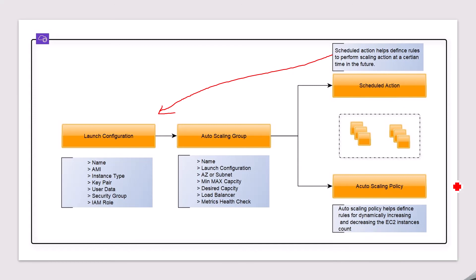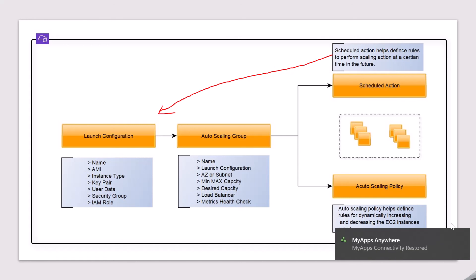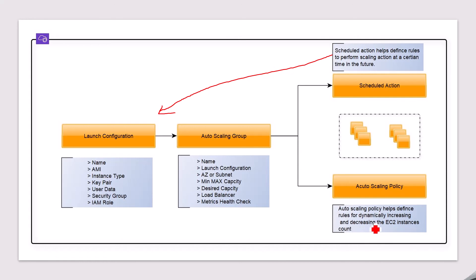Finally, the auto-scaling policy helps define rules for dynamically increasing and decreasing EC2 instances. For example, if traffic is very low and you already have multiple instances spun up, it will dynamically decrease the count — you don't need to do anything manually. Hope you're liking these tutorials. If you have any doubts or questions, please write in the comments. Thanks a lot.